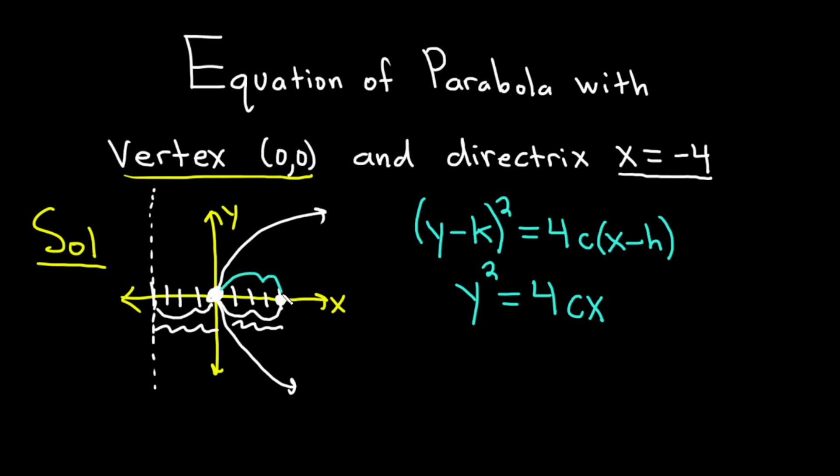So this distance here is called the absolute value of c. And it's 4 in this case, because you can see it's 4. Now because it opens right, c is positive. So c is going to be positive 4. If it opens left, then c is negative 4. So plugging c in, we have y² equals 4 times 4 times x. So y² equals 16x. And that's going to be the equation of our parabola.